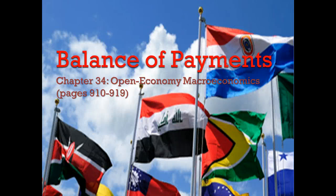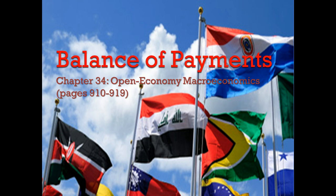Welcome back. Today we're going to talk about the balance of payments in chapter 34 of your book, and the pages are listed on the screen. What we're going to be looking at is trying to understand what is meant by the concept of balance of payments, and we're going to more specifically look at the difference between what's called the current account and the financial account. We'll talk about what those are and how they're different, and finally we'll look at why capital flows from one country to another. So let's go ahead and take a look at the two different accounts — the current account and the financial account — which make up the balance of payments.